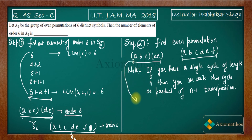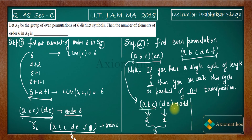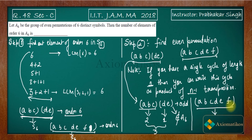For the cycle (abcde) of length 5, it can be written as a product of 4 transpositions — wait, applying the rule: it produces 4+1 = but let's check. The cycle (abcde) with a fixed element has length 5, giving n-1 = 4... actually (abcde)(f) gives 4 transpositions total — that's even. But for the 6-cycle (abcdef), you get n-1 = 5 transpositions, which is odd, so it is an odd permutation and does not belong to A6.